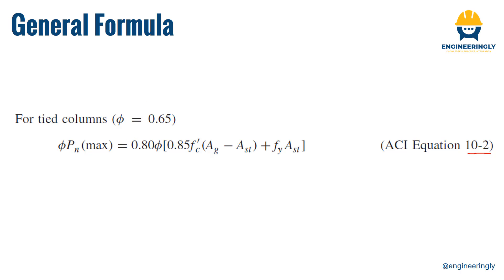The formula shows the ultimate load, phi times nominal load, which equals 0.8 times phi times 0.85 times the compressive strength of concrete times the gross section area of the concrete column, minus the steel area, plus the yield strength of steel times the steel area. We know the compressive strength of concrete and the yield strength of steel. What we need to calculate is the ultimate load, the gross sectional area, and the required steel area.